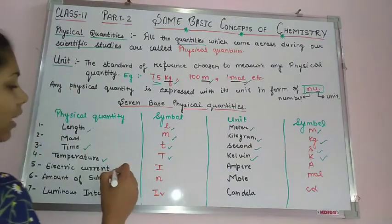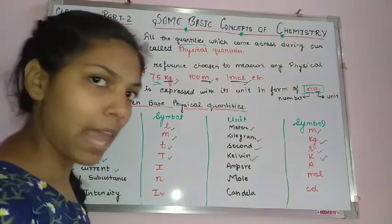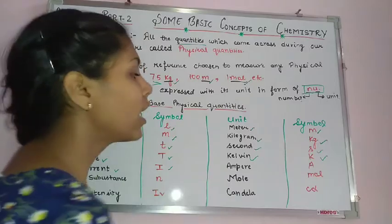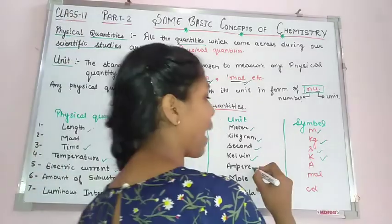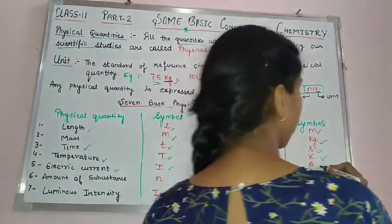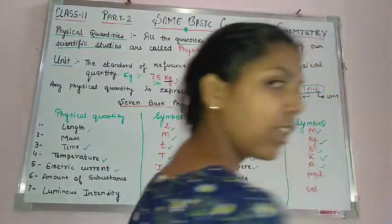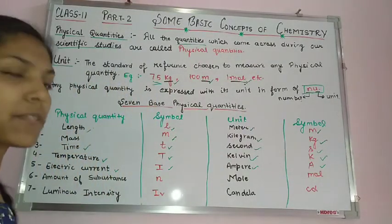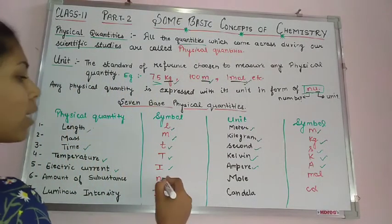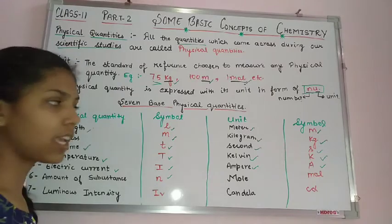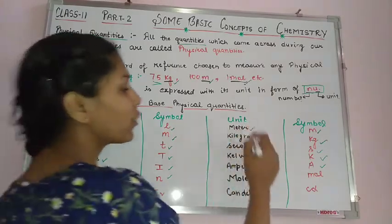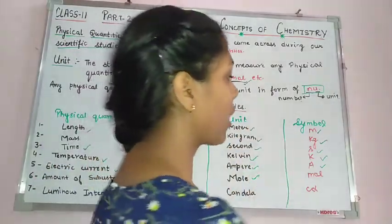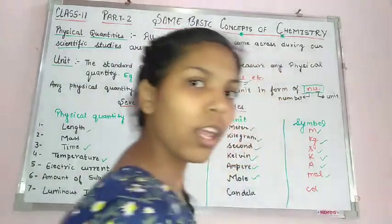Electric current, which we have studied earlier, is represented by capital I. Its SI unit is ampere and its symbol is capital A. The next physical quantity is amount of substance, represented by small n. Its SI unit is mole and its symbol is small mol.